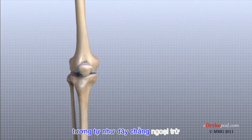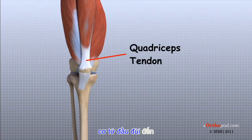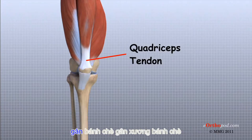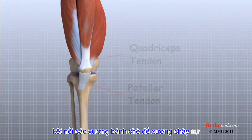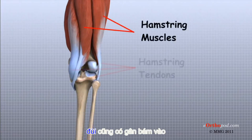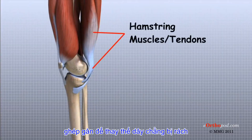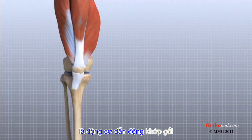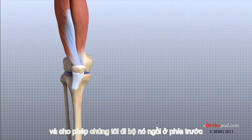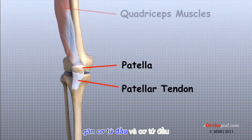Tendons are similar to ligaments, except that tendons attach muscles to bones. The quadriceps tendon connects the large quadriceps muscle of the thigh to the patella. This tendon continues across the patella, or kneecap, and blends into the patellar tendon. The patellar tendon connects the patella to the tibia. The hamstring muscles on the back of the thigh also have tendons that attach in different places around the knee joint, and these tendons are sometimes used as tendon grafts to replace torn ligaments. The extensor mechanism is the motor that drives the knee joint and allows us to walk. It sits in front of the knee joint and is made up of the patella, the patellar tendon, the quadriceps tendon, and the quadriceps muscles.